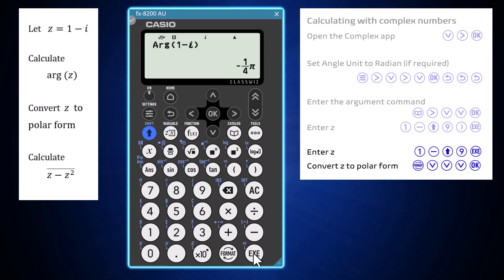Alternatively, a complex number's form can be converted from rectangular to polar form, or from polar to rectangular form, using the format key. To do this,